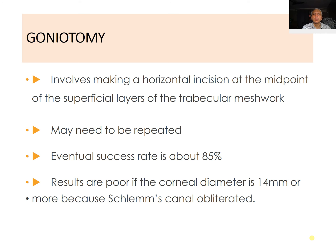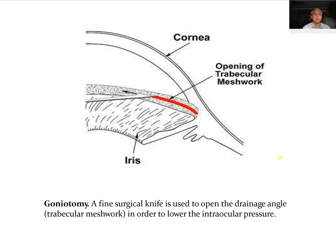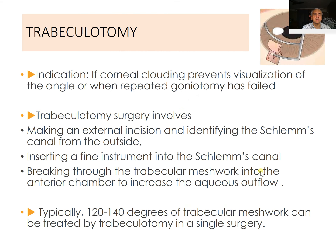Goniotomy needs to be performed before the corneal diameter reaches 14 millimeters; results are poor if the diameter is larger because at that stage Schlemm's canal is obliterated. Using a goniotomy knife and a gonioscopic contact lens, a 180-degree incision is made in the trabecular meshwork; typically 120 degrees out of 360 degrees can be treated in a single setting. The incision opens the abnormally developed trabecular meshwork to allow greater aqueous outflow and lower intraocular pressure.